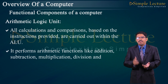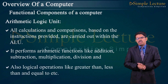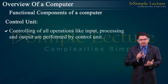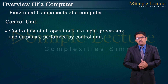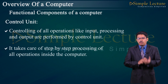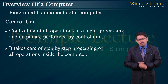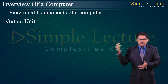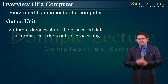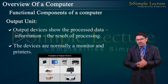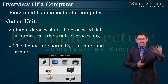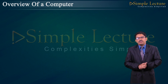All calculations and comparisons based upon the instructions provided are carried out within the ALU. The Control Unit controls all operations — input, processing, and output — and takes care of step-by-step processing of all operations inside the computer. The output unit displays the input received from the keyboard. Output devices such as the monitor and printer show the processed data or information. For example, typing a document and giving a print command produces the document on the printer.